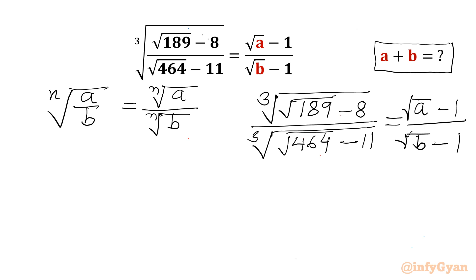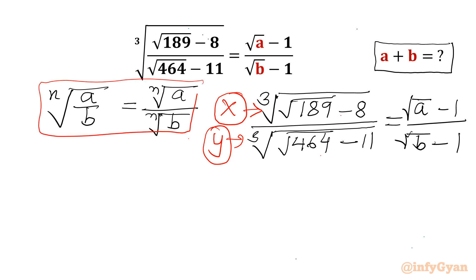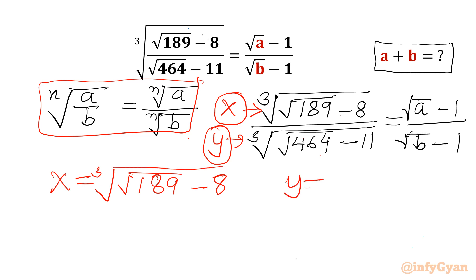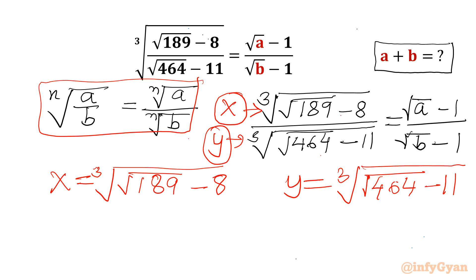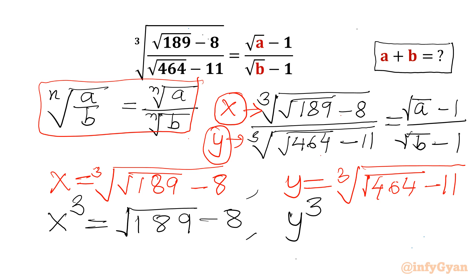Now I will consider our numerator equal to x and denominator equal to y. So x I am considering as cube root of (square root 189 minus 8), and y will be cube root of (square root 464 minus 11). Now I will consider cubing both sides for both equations.